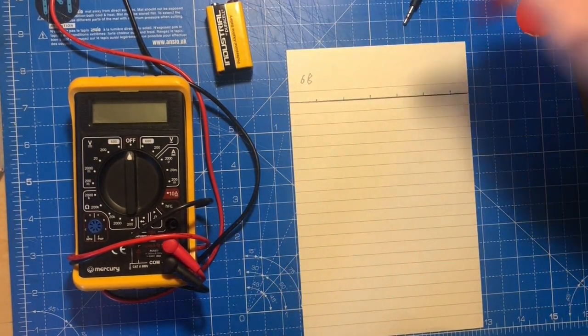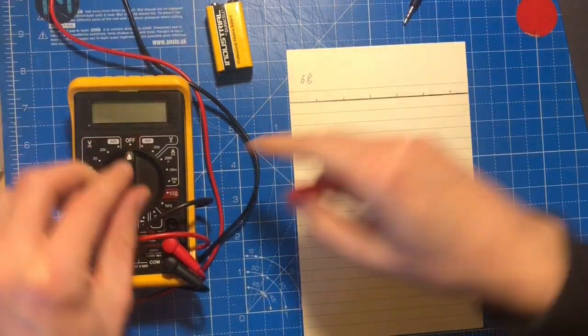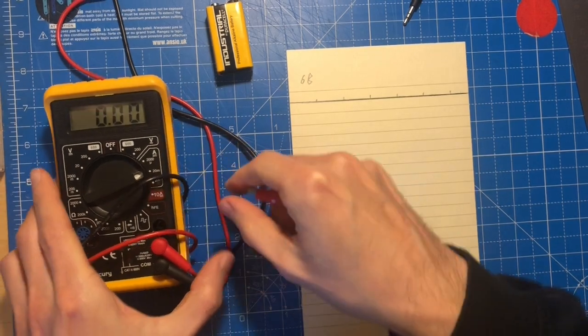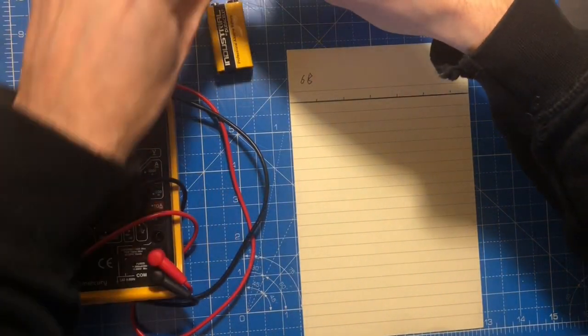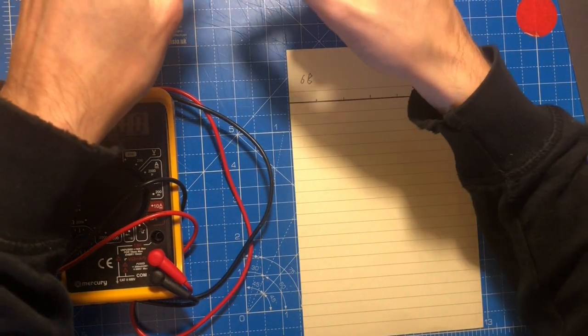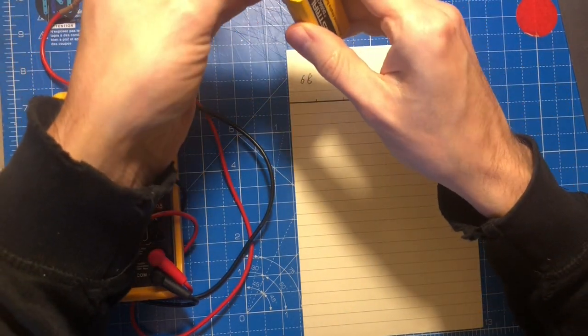Now, to wire this up, I'm just going to use a multimeter as an ammeter. I'm going to set it to 20 milliamps. I think that should be correct, but we'll see. And connect this to the positive terminal.